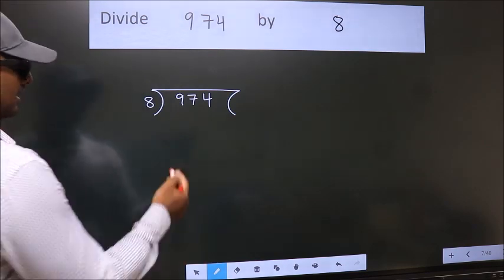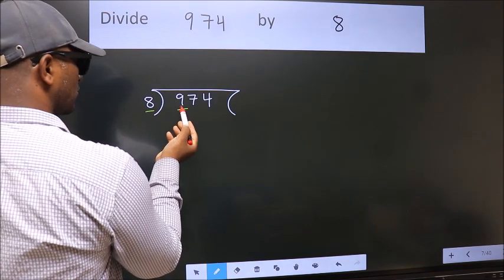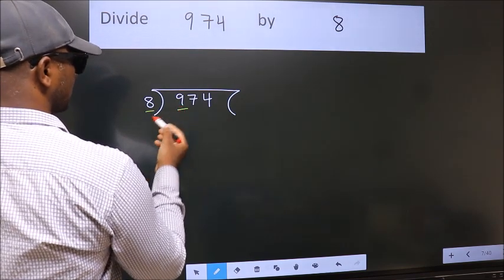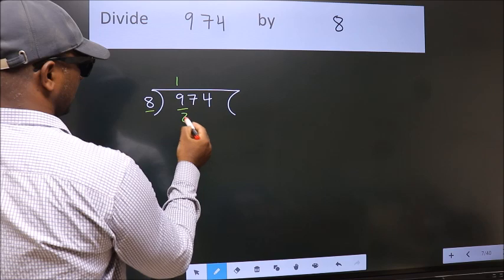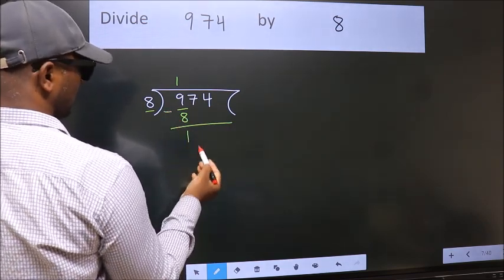Next, here we have 9, here 8. A number close to 9 in the 8 table is 8 ones, which is 8. Now we should subtract. We get 1.